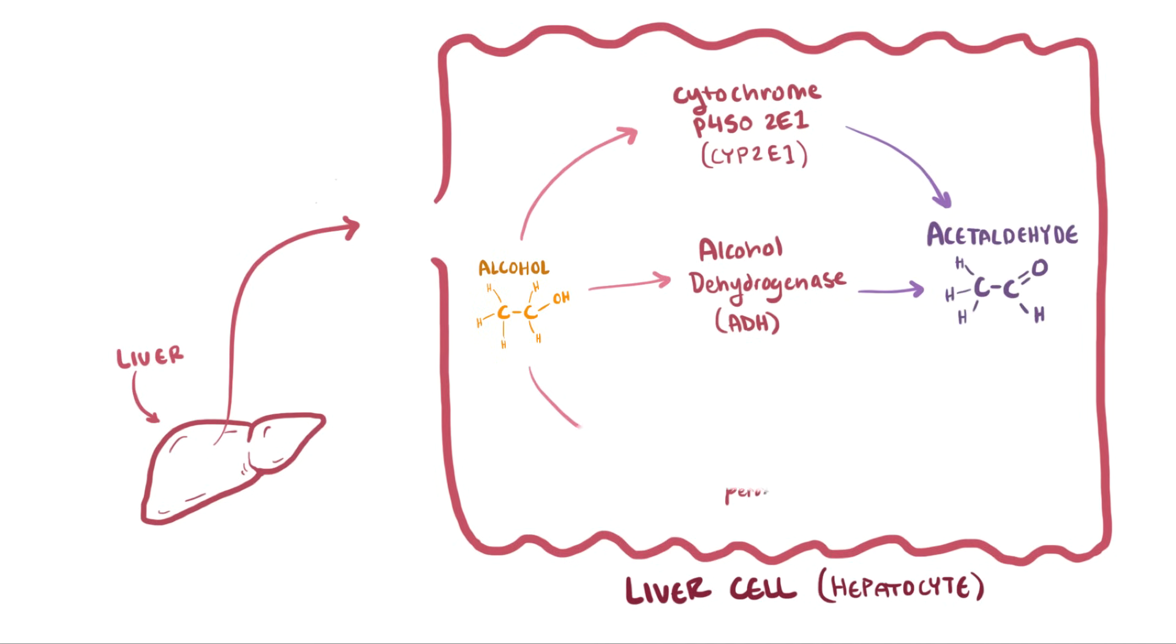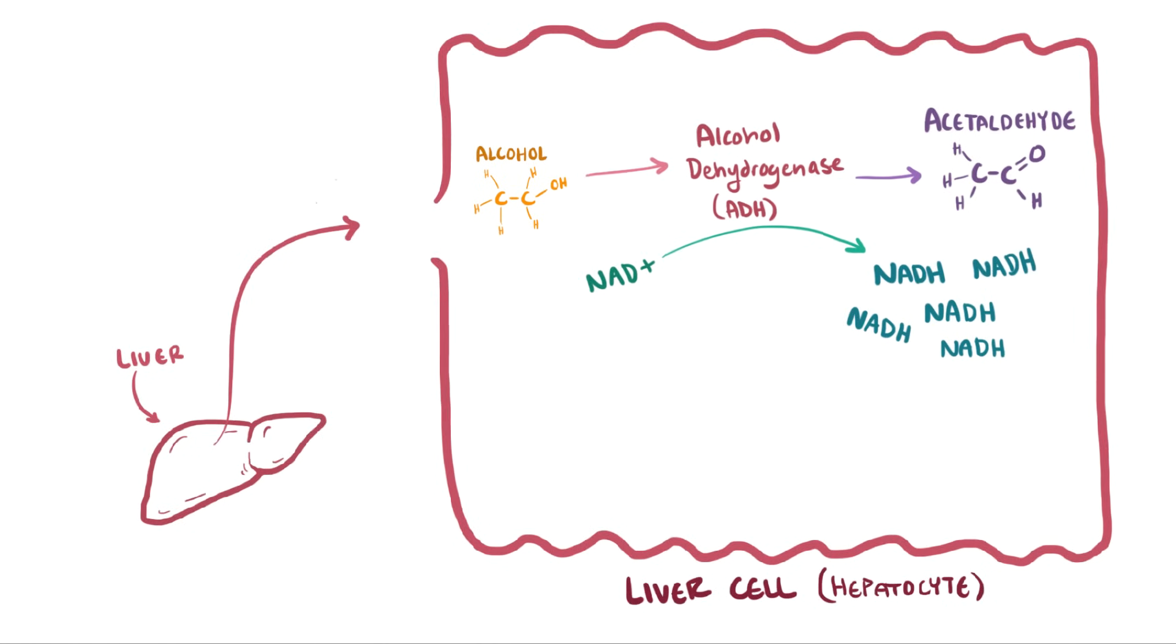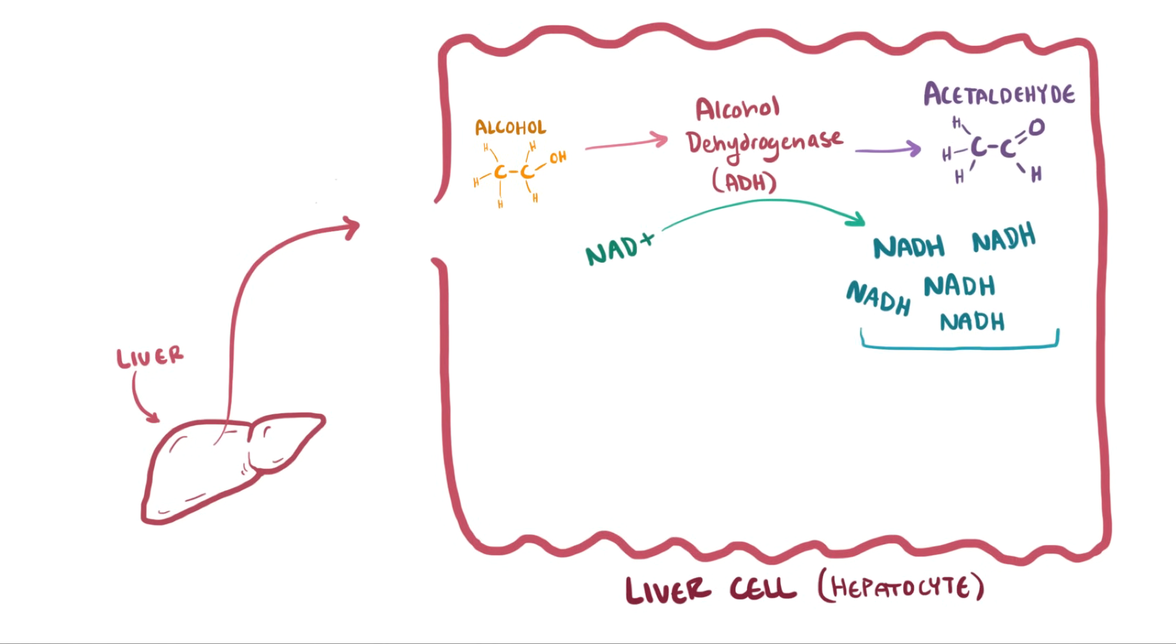Once the ADH enzyme is used to convert the alcohol, it needs another compound called NAD+, which is then converted into NADH. As NADH levels increase and NAD+ levels decrease, this has two effects: higher NADH levels tell the cell to start producing more fatty acids, and lower NAD+ levels result in less fatty acid oxidation, both of which lead to more fat production in the liver.